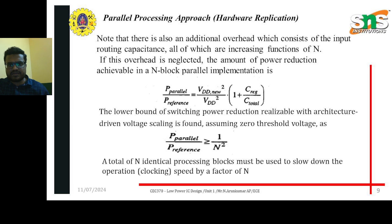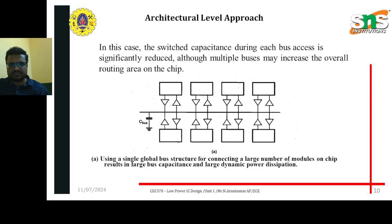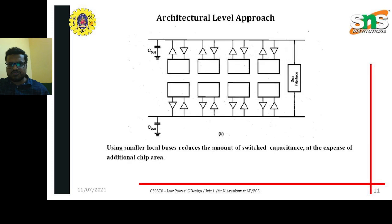Hardware replication calculations are performed by the total number of reference circuits added to the multiplexer circuit with respect to parallel connections, which must be greater than or equal to 1/n, where n equals the total number of clock pulses given to the entire unit. Next is the architectural level approach, where buses are added for connecting all terminals so that the same supply is forwarded to all terminals, providing the same voltages across all bus terminals.